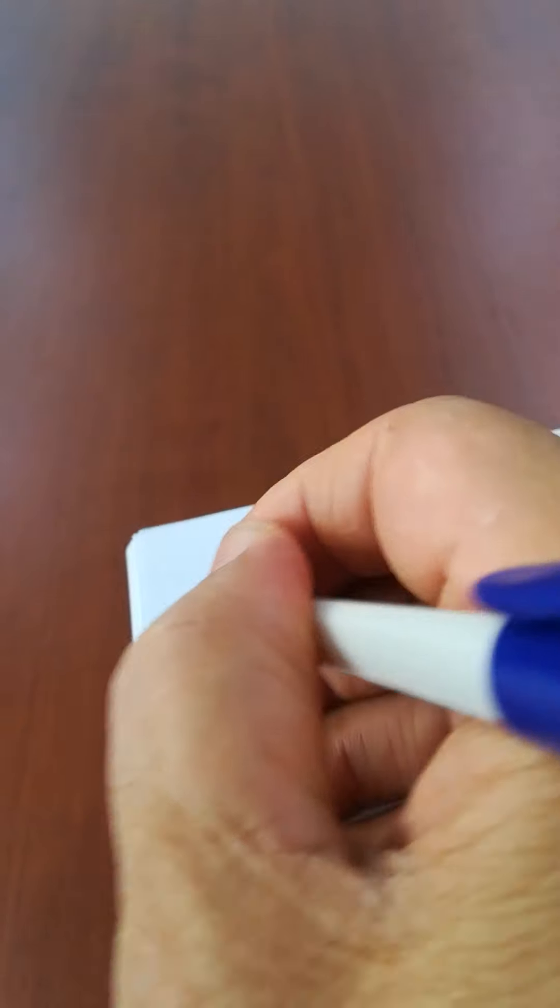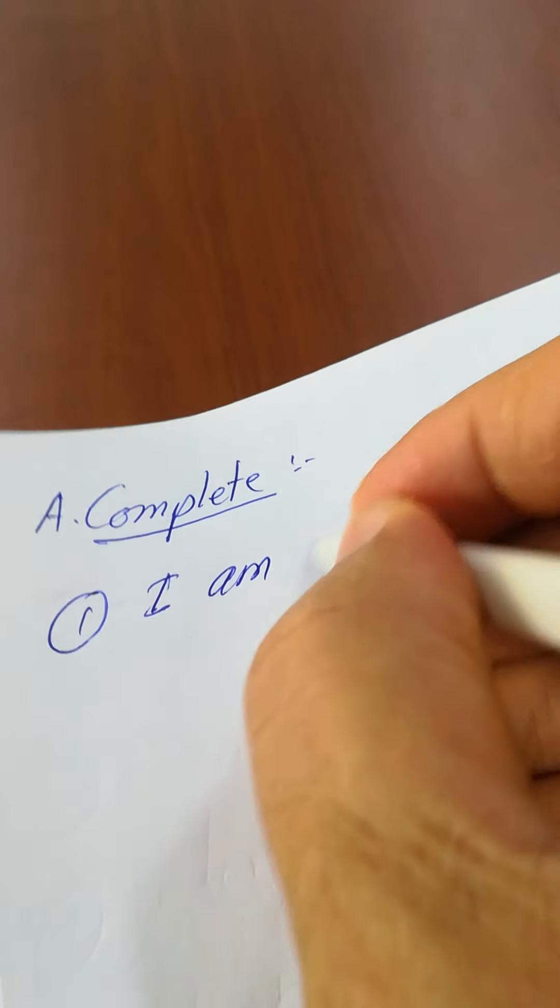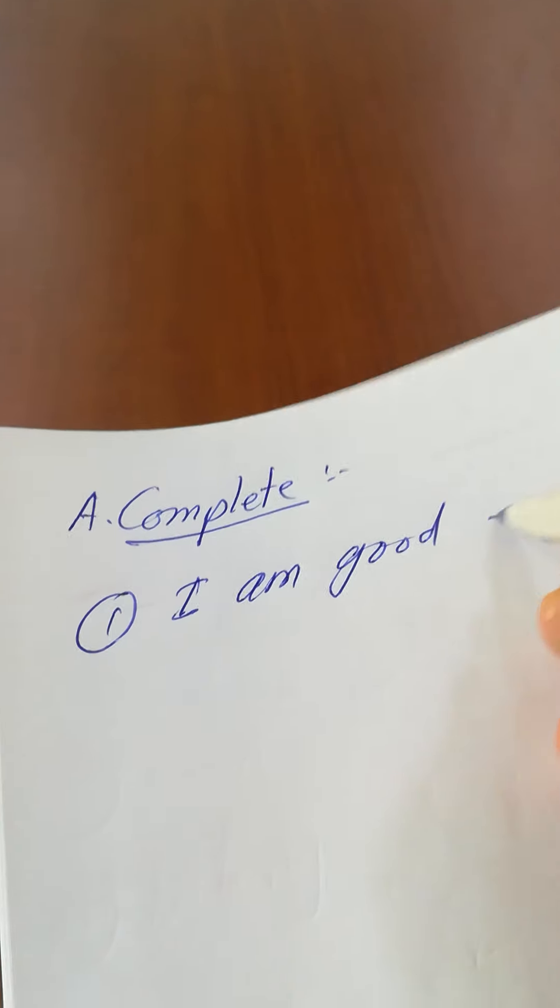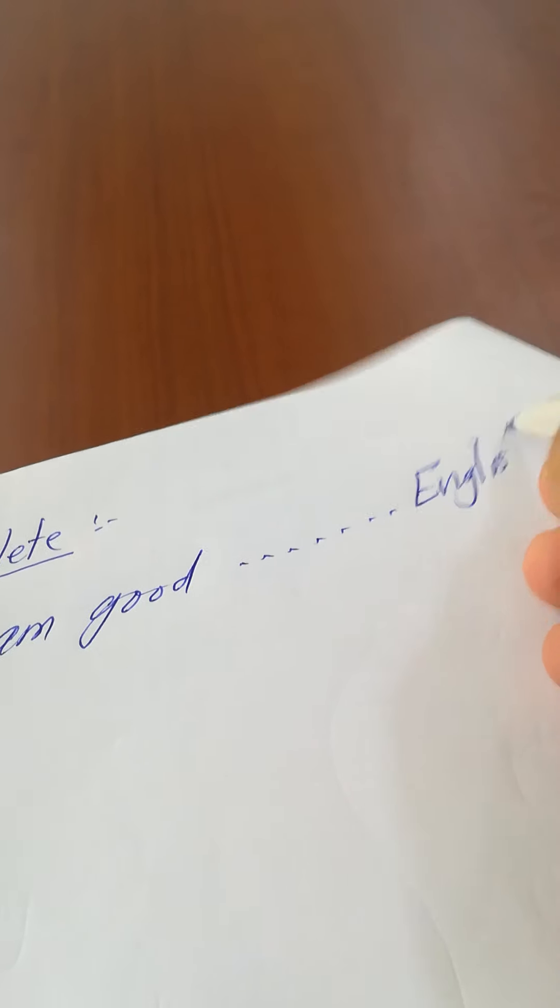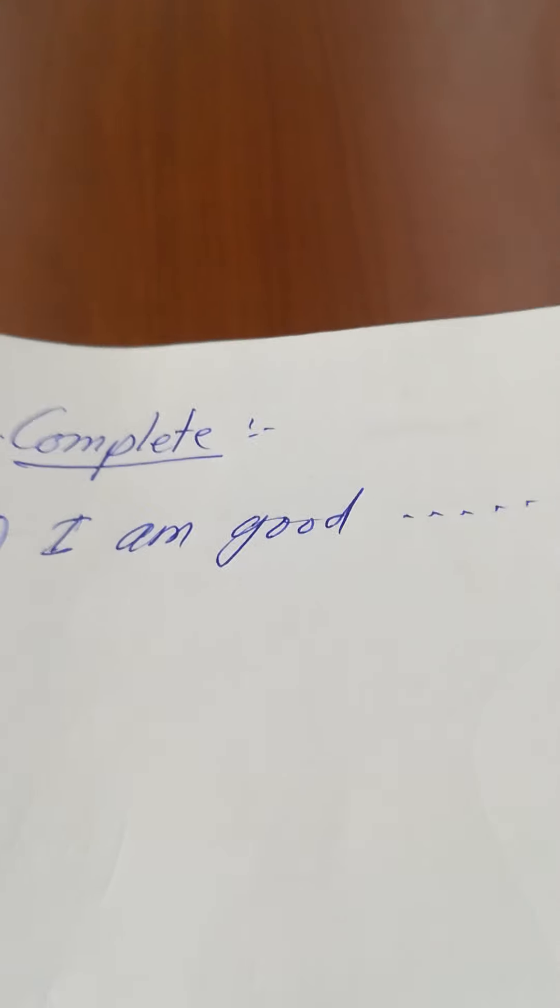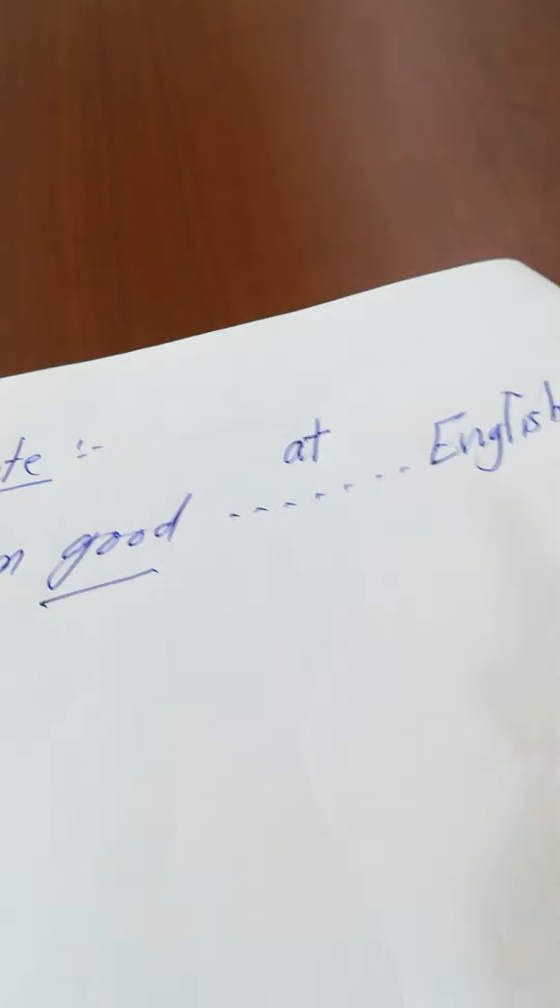Complete with a suitable preposition. Number one: I am good space English. What is the right preposition here? Good. You should say good at, don't say good in. The right preposition here is good at.